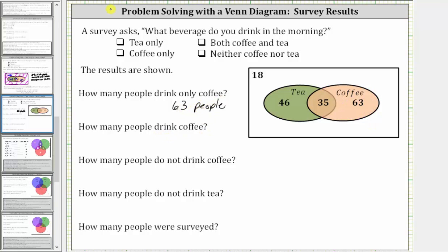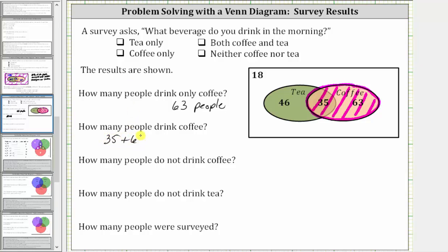Next, how many people drink coffee? In this case we consider the entire set of coffee drinkers. The number of people that drink coffee is equal to 35 plus 63, which is equal to 98 people.